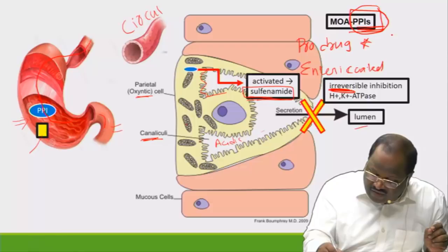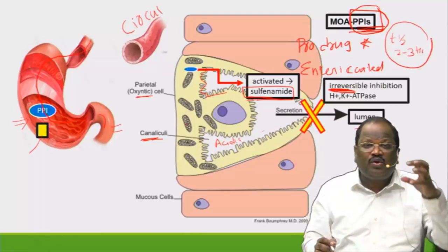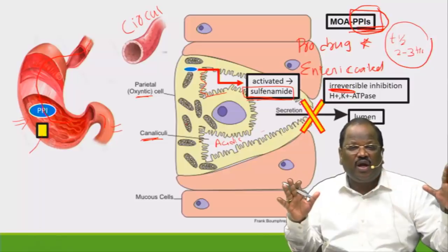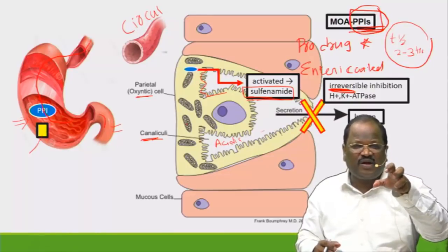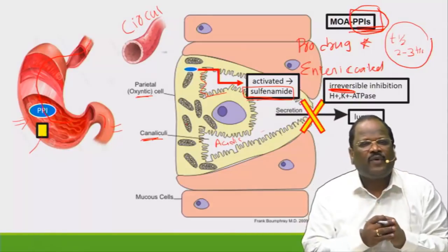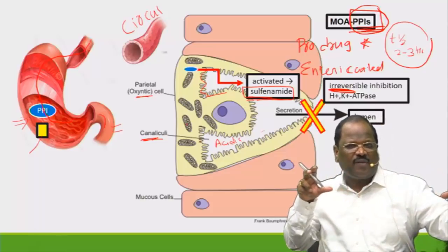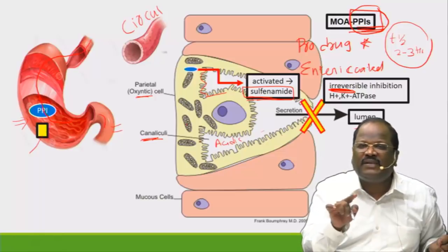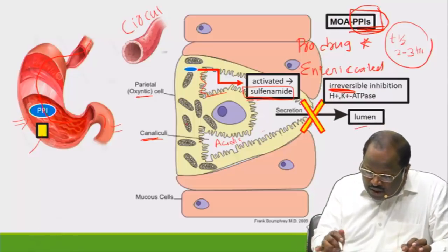Most proton pump blockers have a half-life of only two to three hours, yet they are able to act for a whole 24 hours. How is this possible? Because of irreversible inhibition. So the MCQ question: why, even though proton pump blockers have a short half-life, do they act for a longer period? Answer: because they are irreversible inhibitors of the proton pump.